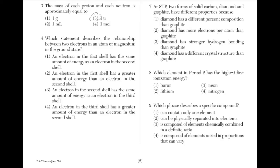Which statement describes the relationship between two electrons and an atom of magnesium in the ground state? The answer is 4: an electron in the third shell has a greater amount of energy than an electron in the second shell. As the electrons move further away from the nucleus, they have more energy.